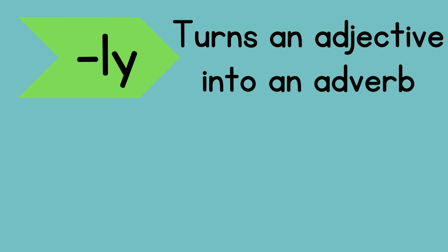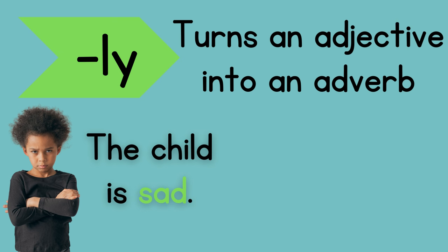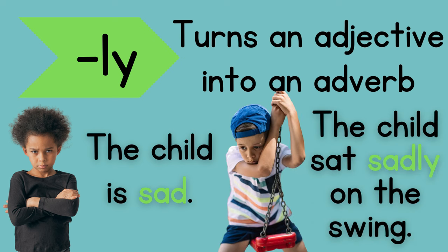Now let's look at the third suffix: -ly. The suffix -ly often turns an adjective into an adverb. Here, the child is sad. Sad is an adjective — it describes a noun or tells us what something or someone is like. When we add -ly to the word sad, we get sadly. Sadly is an adverb, which means it describes a verb. Adverbs describe verbs. The child sat sadly on the swing — how did he sit? Sadly.